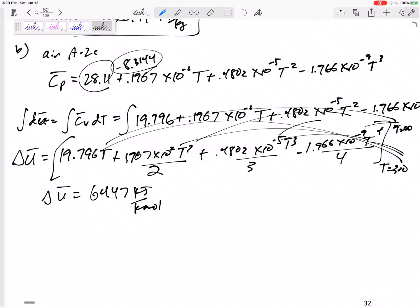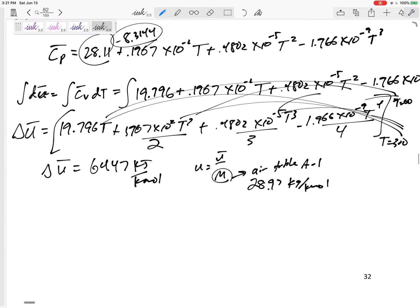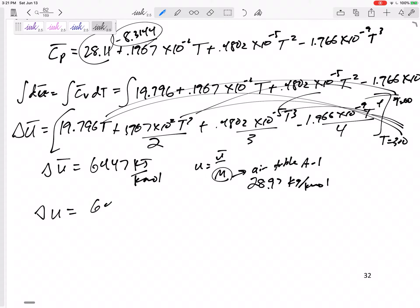But if I want delta U, then I would take this and divide it by one over the molar mass. Let me show, that's U bar, and I know that U is U bar over M. And M of air from Table A1 is 28.97 kilograms per kilomole.